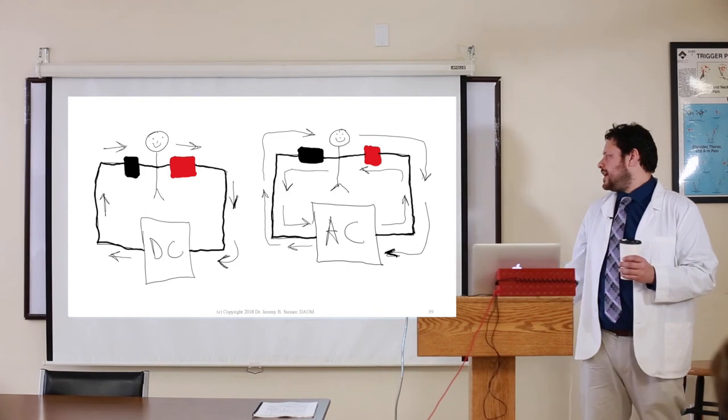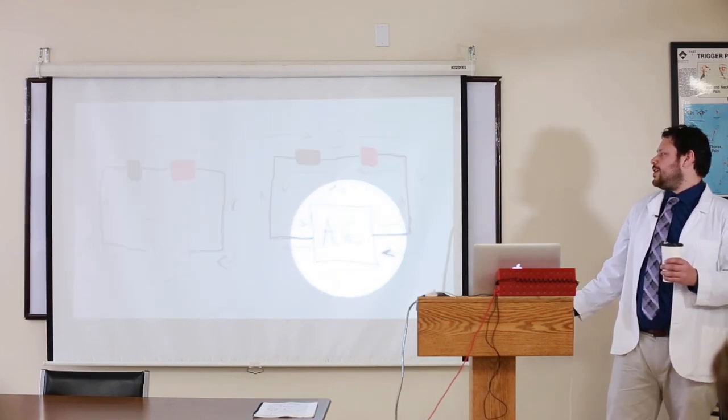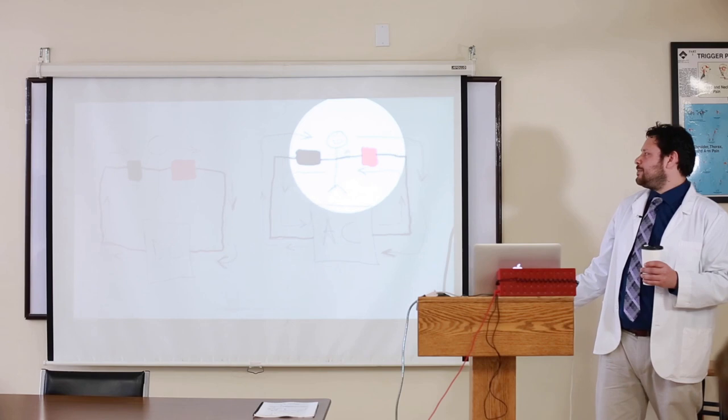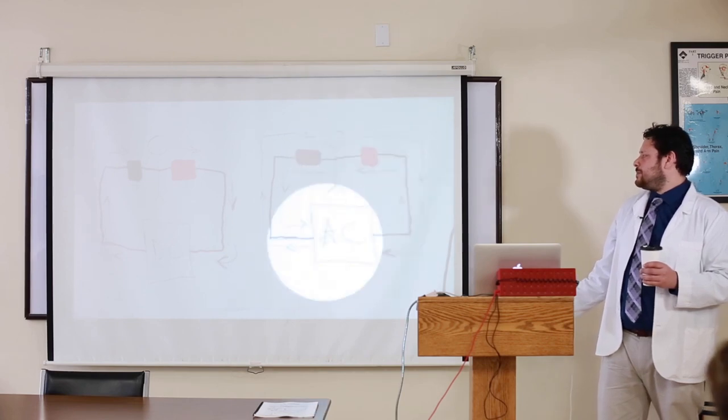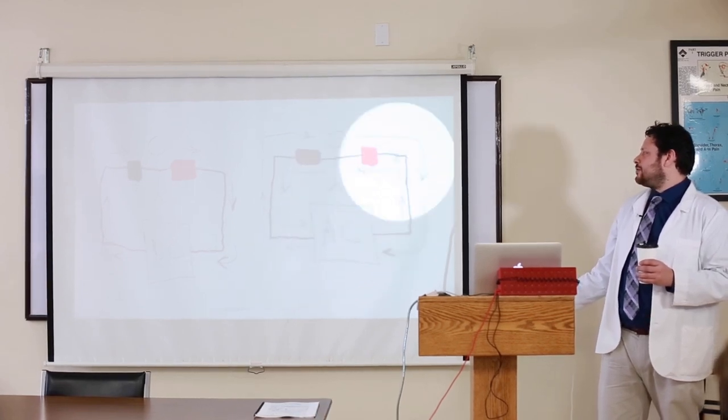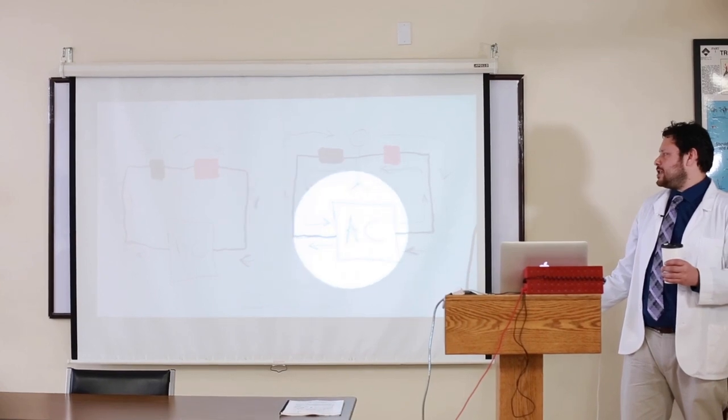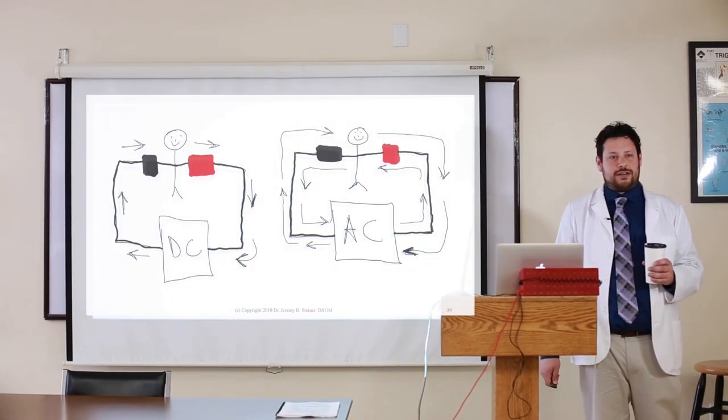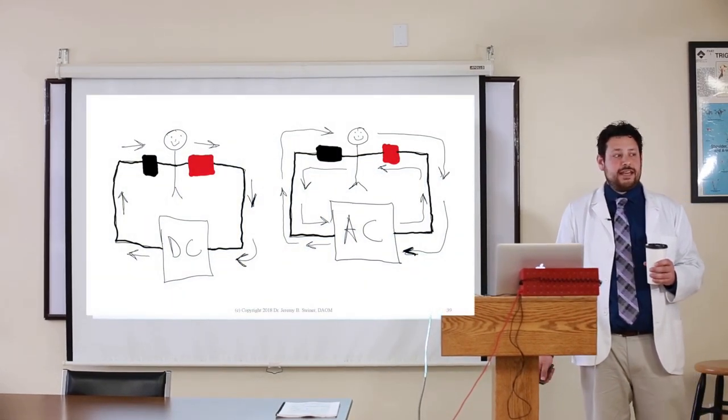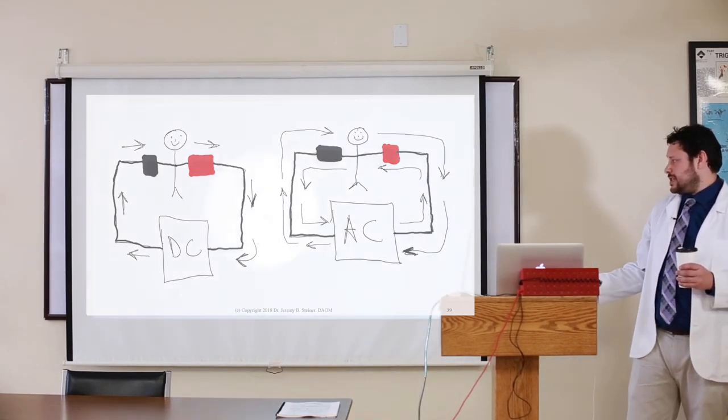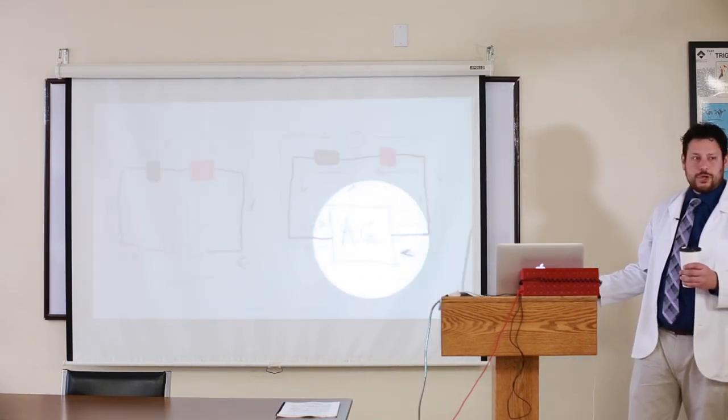Over here, alternating current. First, it goes out of the black into the person, into the red, back into the machine. That's one hertz on an alternating current machine. This is the current machines that we're using, alternating current.